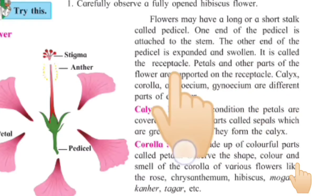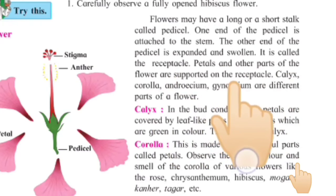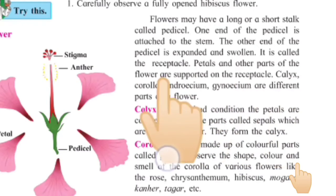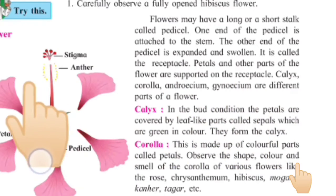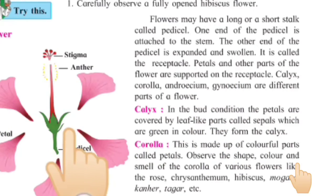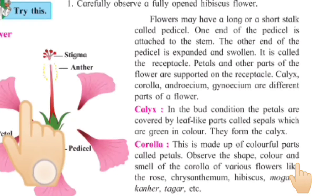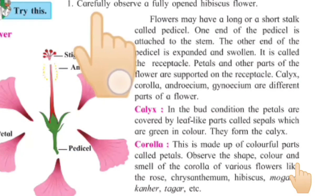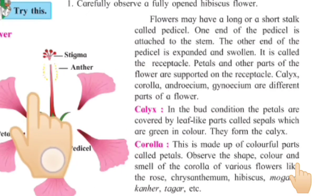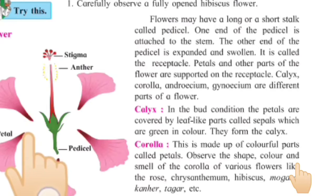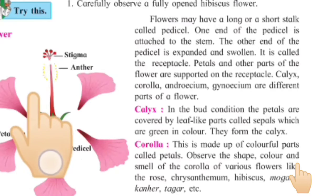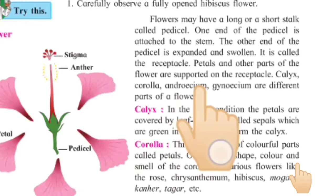Petals and the other parts of the flowers are supported on the receptacle. The flowers, which we call in India, they are attached to our flowers, and that support is called the receptacle.